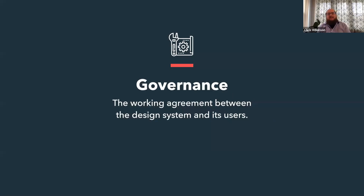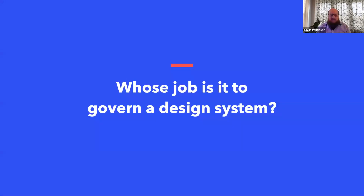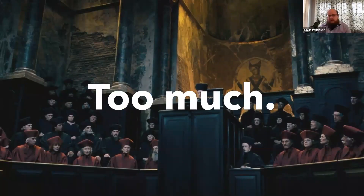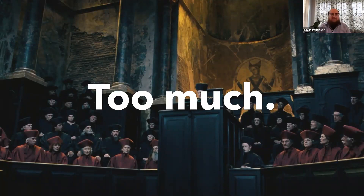Governance is really about the working agreement between the design system team and the people consuming it — how they address new learnings, new component requests, and new features. If you picture what governance of a design system might look like, governance is meant to facilitate conversation and progress, not involve a large panel of people making sweeping judgments. There's a scale to consider for how to think about your design system governance.